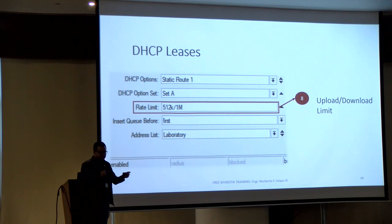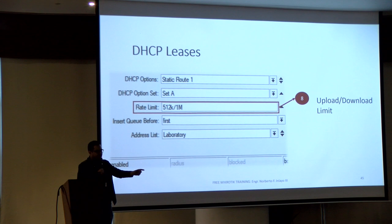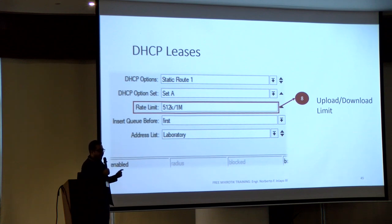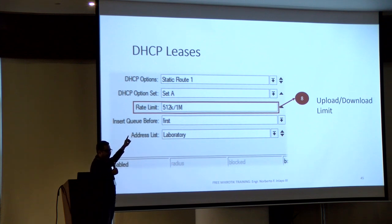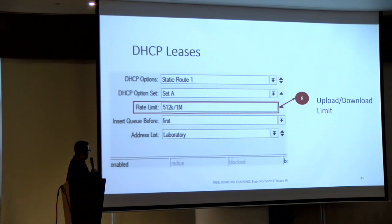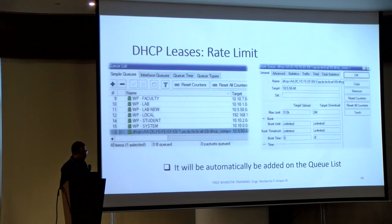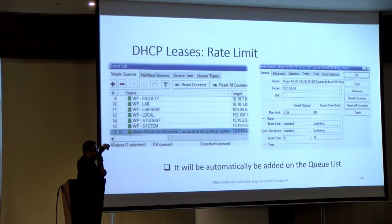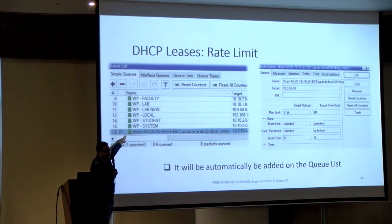We can also have a rate limit within the DHCP lease. For example, I have a staff laptop and I want it to only have a certain bandwidth. Since I know the MAC address and IP address of my staff — it is listed in the DHCP leases — I can easily limit the bandwidth: 512 kilobytes upload and 1 megabyte download. When you do that, it will automatically be listed in the simple queues. So when we add the rate limit, it will be dynamically created in the simple queue.